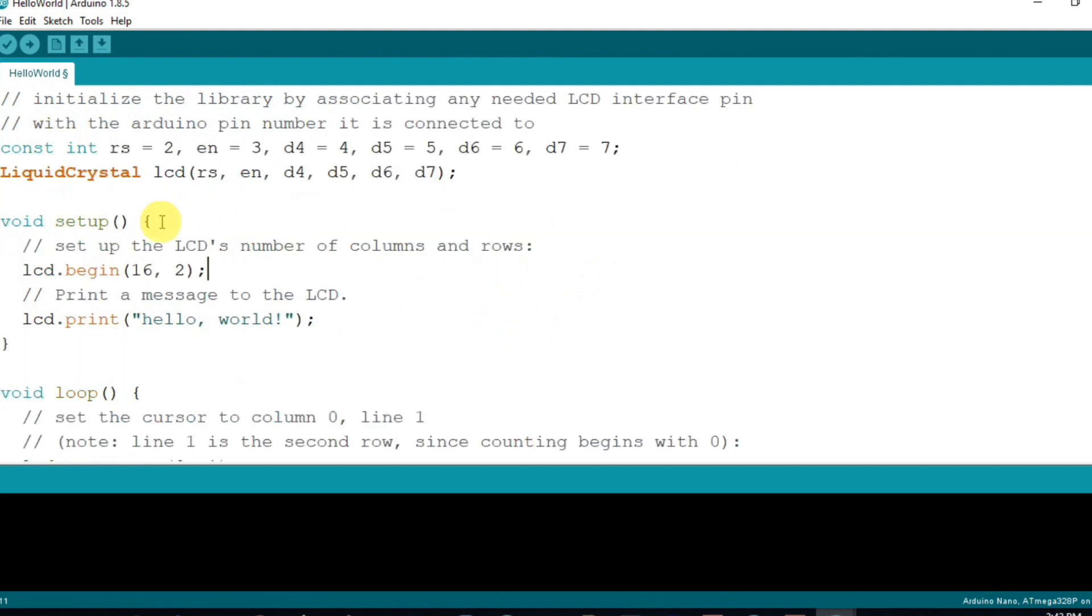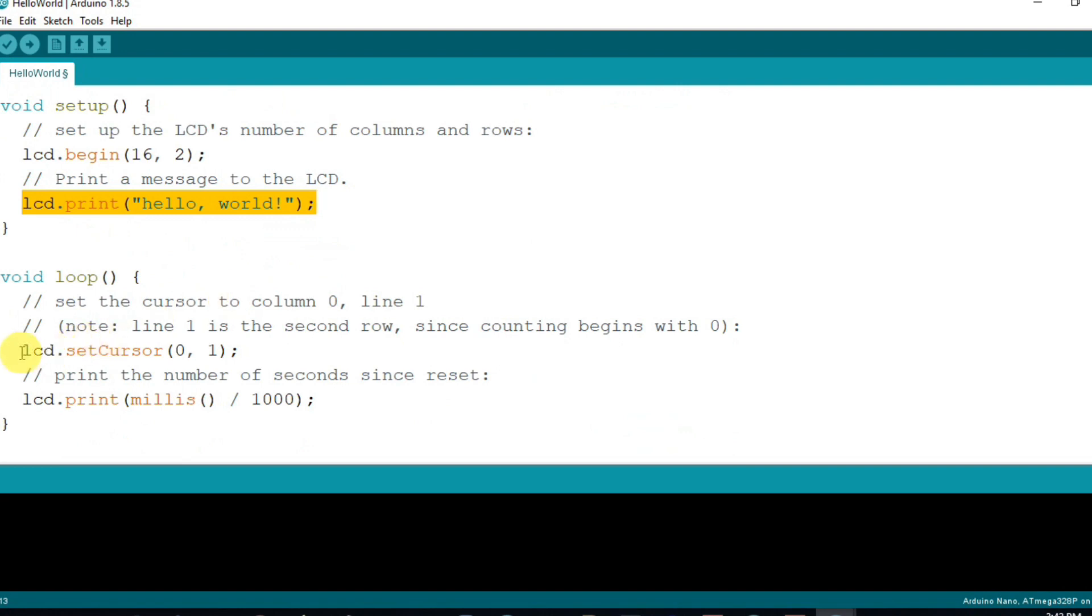Inside the void setup section, lcd.begin(16,2) represents the number of columns and rows of the LCD. Next line, lcd.print hello world, prints the hello world message to the LCD.